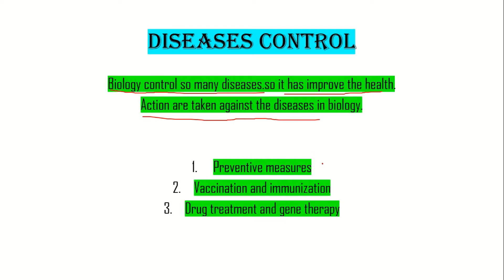The first action is preventive meds. Second is vaccination and immunization. Third is drug treatment and gene therapy. These three are different diseases control methods.